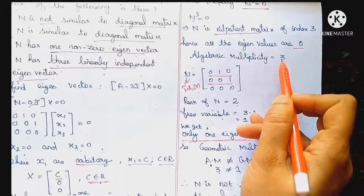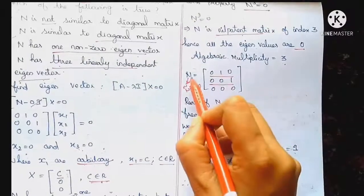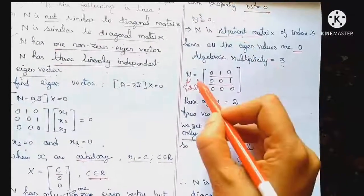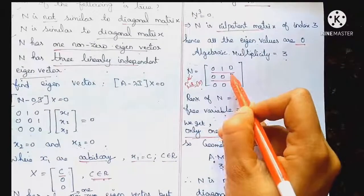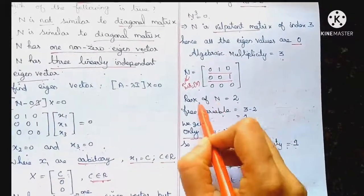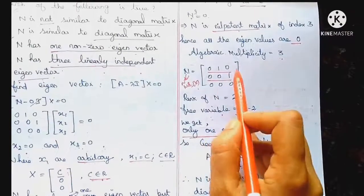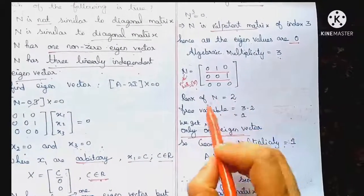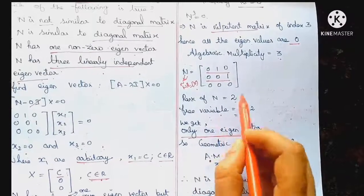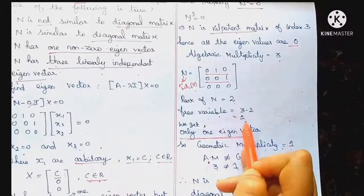This eigenvalue 0 has algebraic multiplicity 3. Now taking an example matrix: its rank is 2, so the number of non-zero rows is 2. We can find the free variable: nullity equals 3 minus 2 equals 1. So geometric multiplicity equals 1.